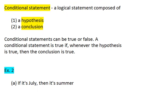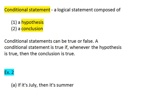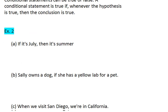A type of statement we can look at is called a conditional statement. A conditional statement is composed of a hypothesis and a conclusion. Just like above, conditional statements can be true or false. The important thing to recognize is that a conditional statement is true whenever the hypothesis is true and the conclusion is true. Let's look at some examples.